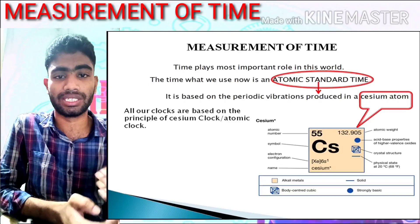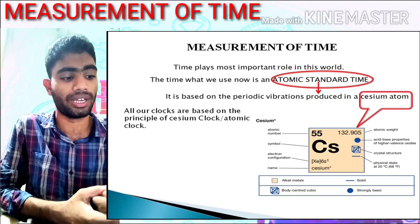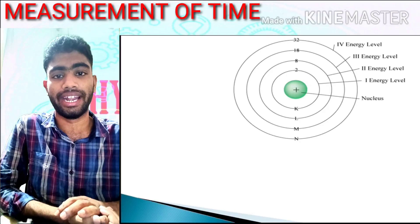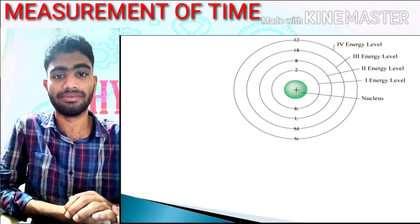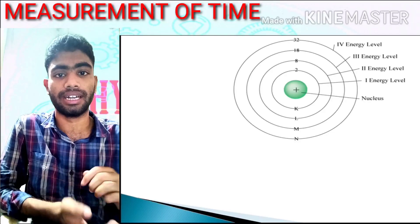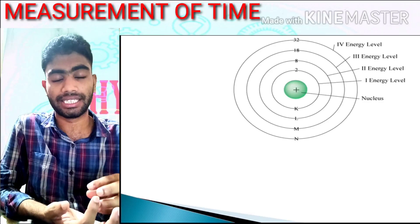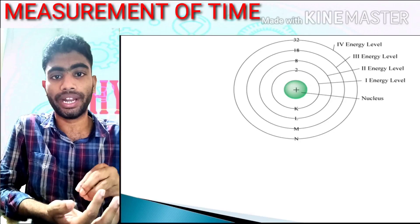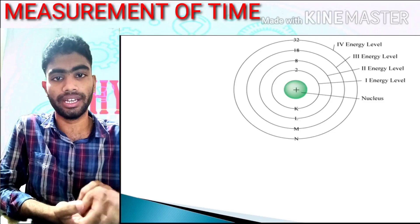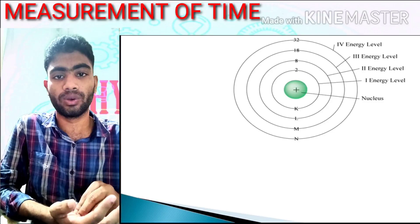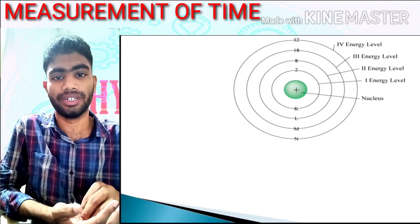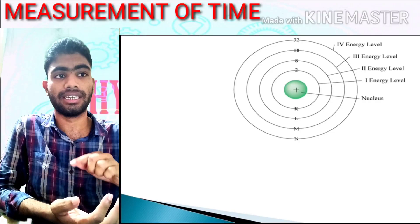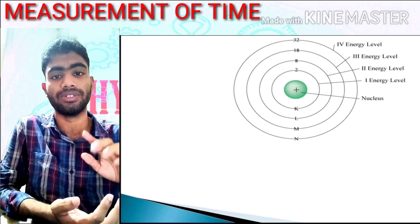Now we will discuss what the cesium clock and atomic clocks actually are. Before going into that, I will give you some basic idea about the atom — how an atom looks and what it contains. The structure of an atom is like this: at its center there is a proton and neutron in a combined state, which we call the nucleus.